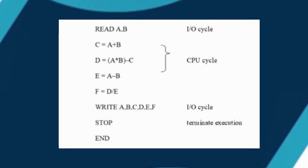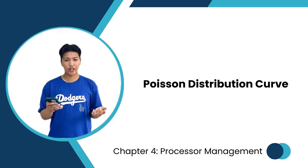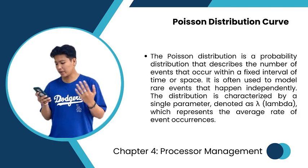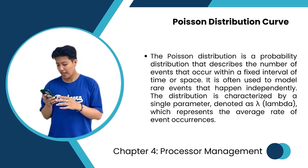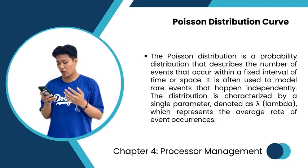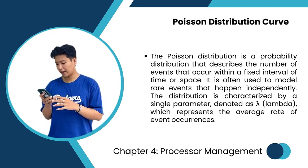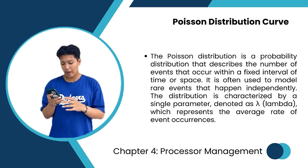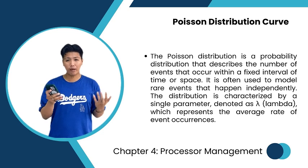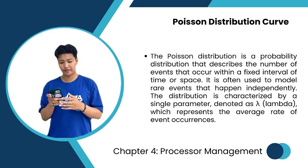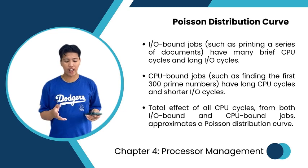You can see on screen how the CPU cycle and I/O cycle work together. The Poisson Distribution Curve is a probability distribution that describes the number of events occurring within a fixed interval of time or space. It is often used to model rare events that happen independently, and is characterized by a single parameter called lambda, which represents the average rate of event occurrences.